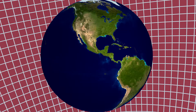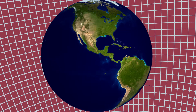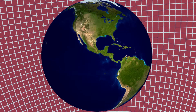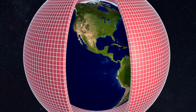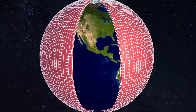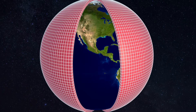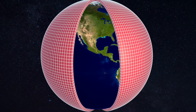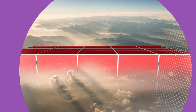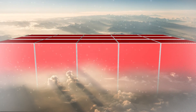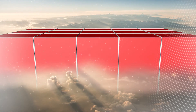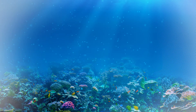Imagine trying to simulate the continuous Earth system in a computer model. Global climate models work by dividing up the Earth's atmosphere, oceans, land, and sea ice into lots of three-dimensional boxes or grid cells. Modern global climate models can have grid cells that are 50 miles squared in the horizontal and that can go up to 90 levels in the atmosphere and down to 60 levels in the ocean.